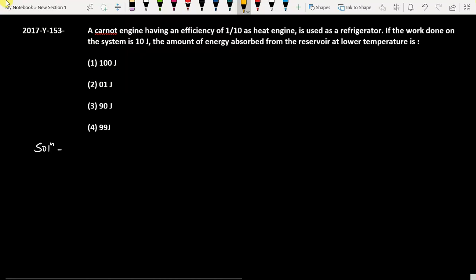First, let's talk about the coefficient of performance beta. The relation between beta and efficiency is beta equals 1 minus eta by eta, which means 1 minus efficiency divided by efficiency.